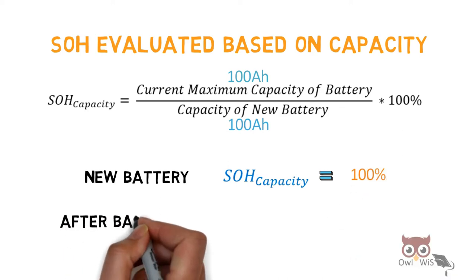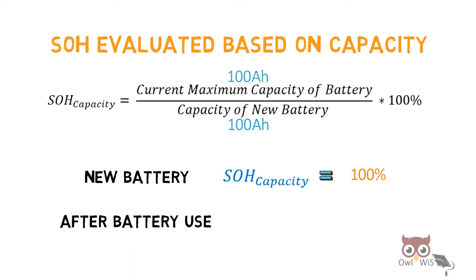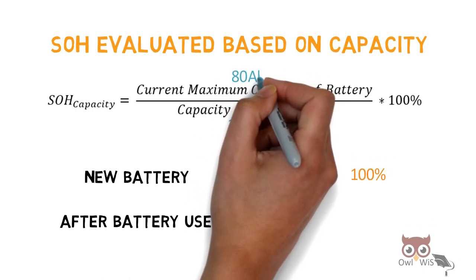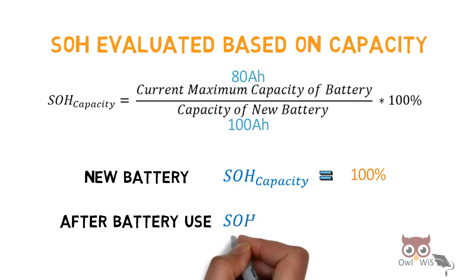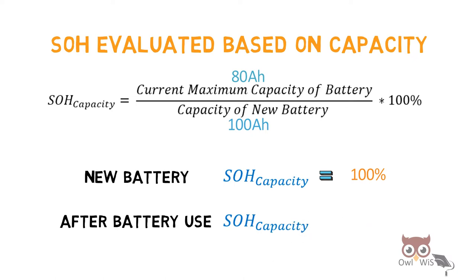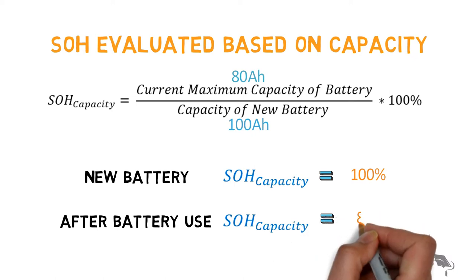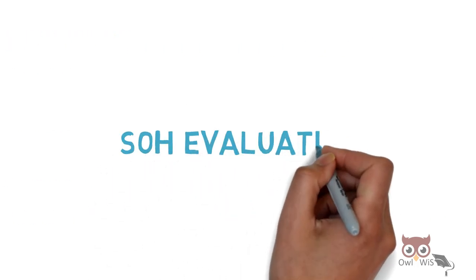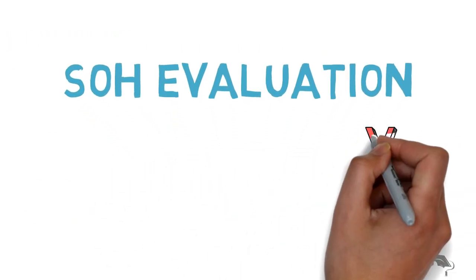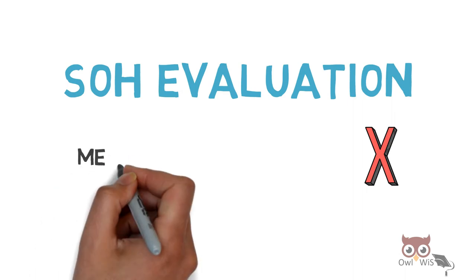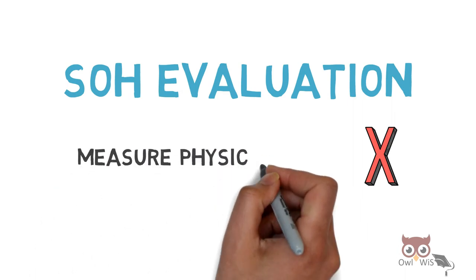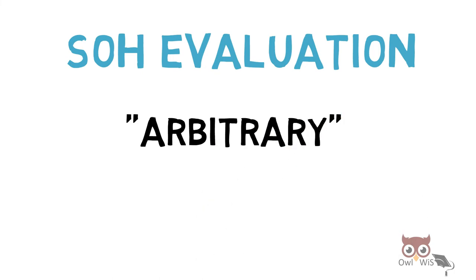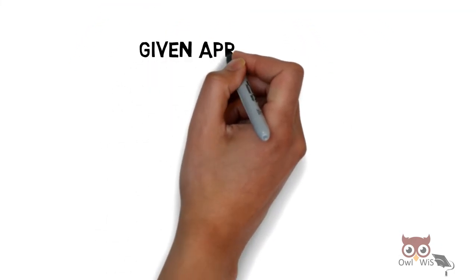After battery use, if the current maximum capacity is reduced to 80 ampere-hours, then the SOH capacity is evaluated to 80%.